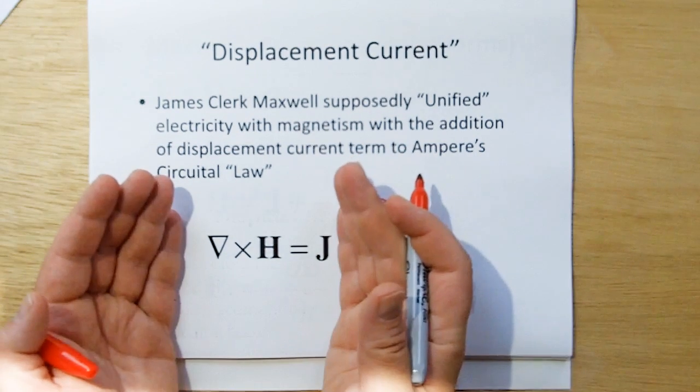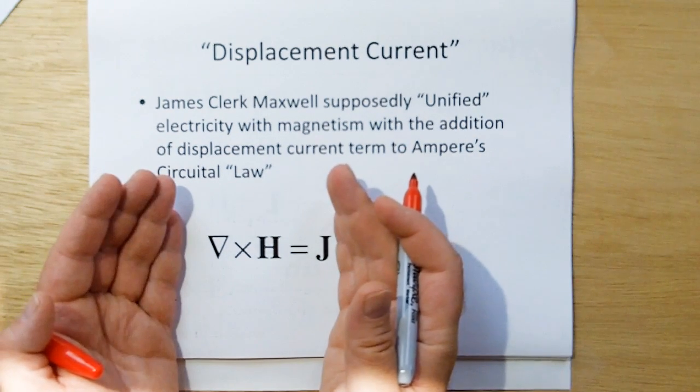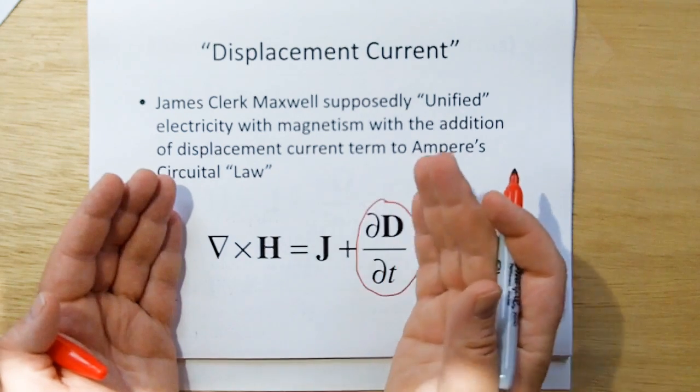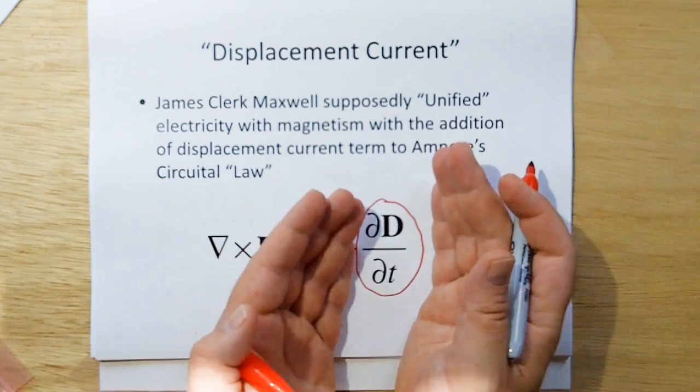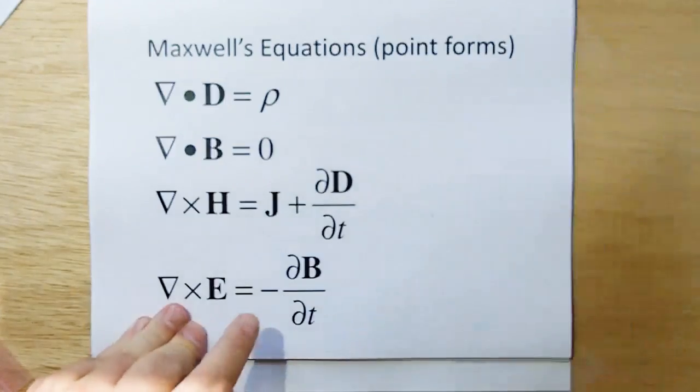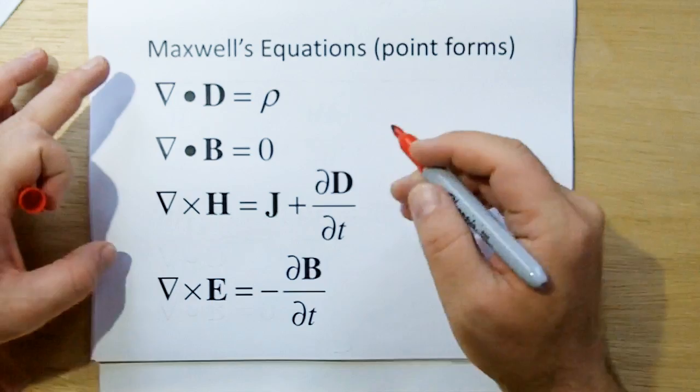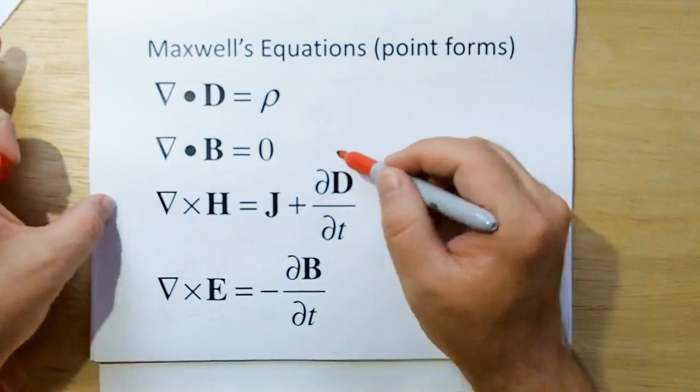This is what Ampere's Circuital Law said, and in order for Maxwell to make the plane wave equation, which was the model for light, he needed to add this displacement current term. By addition of this, and this is now all of Maxwell's equations, he's given credit for all of these, but in fact the only addition to these equations is this.